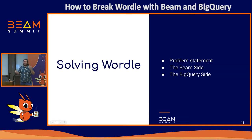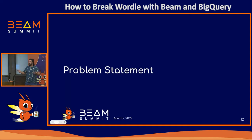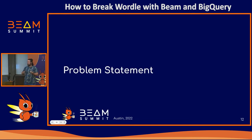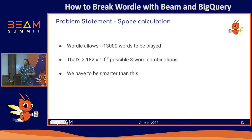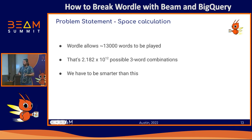So how did I actually implement everything? When I start this type of project, I like to start by asking: what can go wrong? The biggest thing here is that since Wordle allows around 30,000 words, if I blindly join them together I get something on the order of 2 multiplied by 10 to the 12 combinations. This is huge — a very big space. So we need to be smarter than that and do something to reduce the space of combinations.